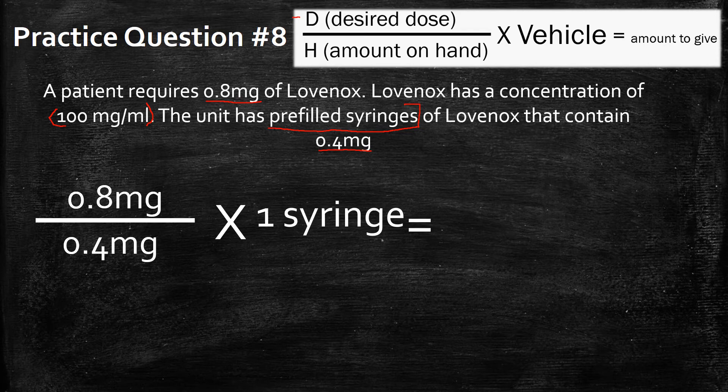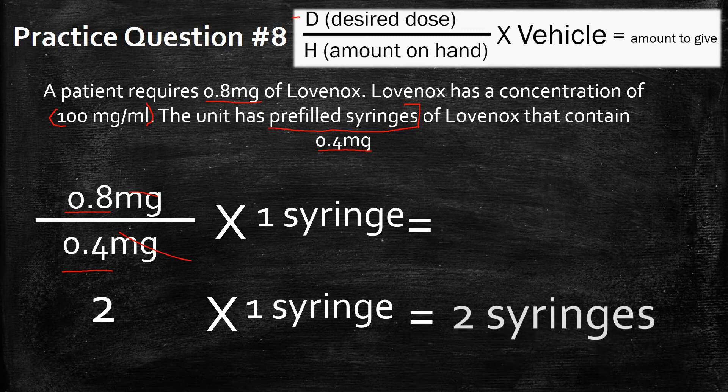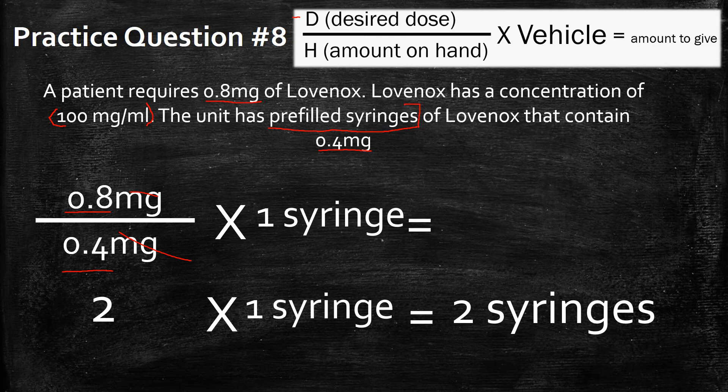Then we just solve it like any other question. 0.8 divided by 0.4 gives us two — cross out the milligrams — and we multiply that by the vehicle, which is one pre-filled syringe. Two multiplied by one pre-filled syringe gives you two syringes. So in order to give this person this dose, you're going to have to give them two of the pre-filled syringes.